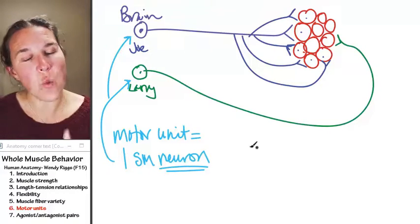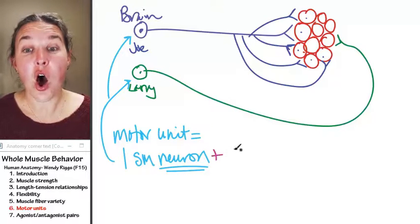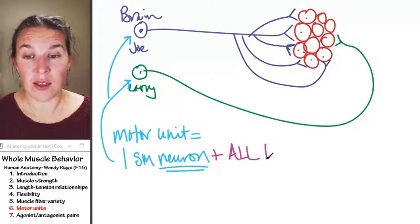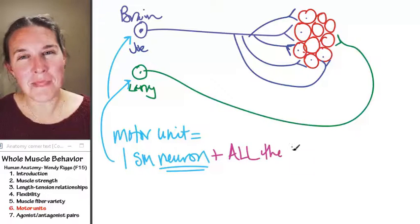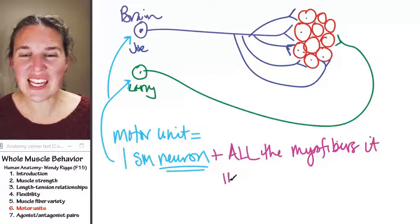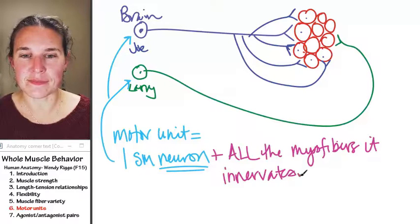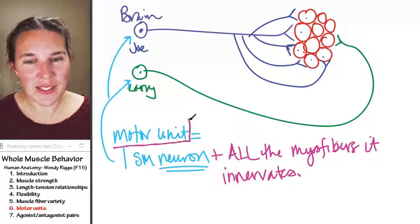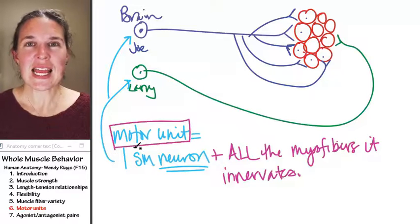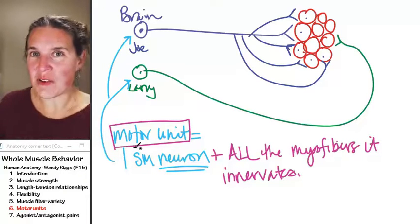Relax. It's one somatic motor neuron plus all the muscle fibers, so the myofibers, it innervates. So a motor unit is one neuron and all the myofibers.